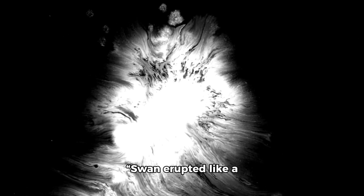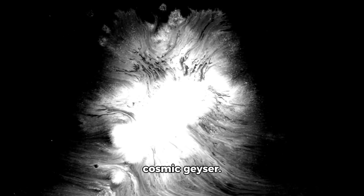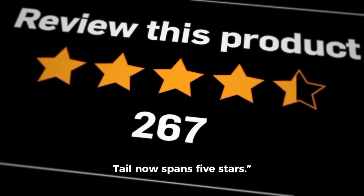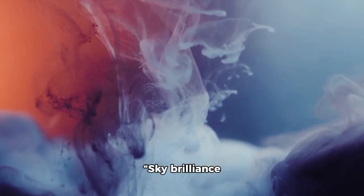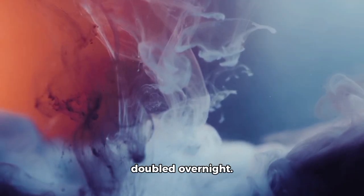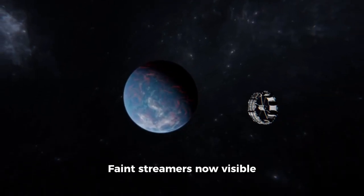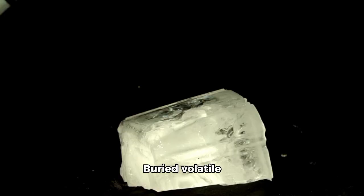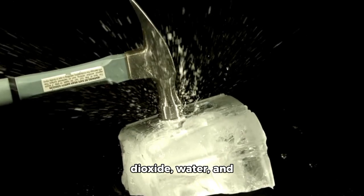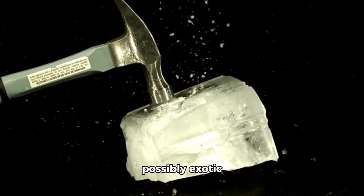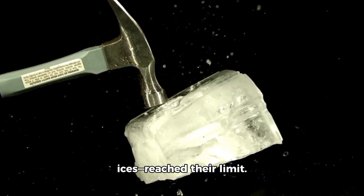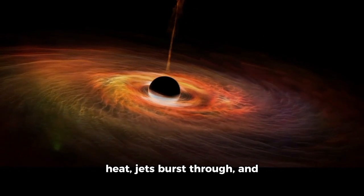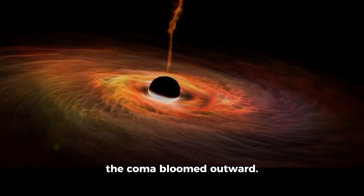Itagaki's log read, Swan erupted like a cosmic geyser. Tail now spans five stars. Mariazzo noted, Sky brilliance doubled overnight. Faint streamers now visible even in suburban haze. The cause lay deep inside: buried volatile pockets, carbon dioxide, water, and possibly exotic ices reached their limit. The crust cracked under solar heat, jets burst through, and the coma bloomed outward.